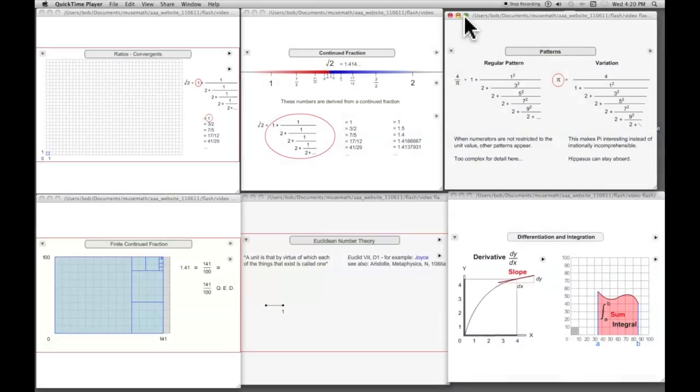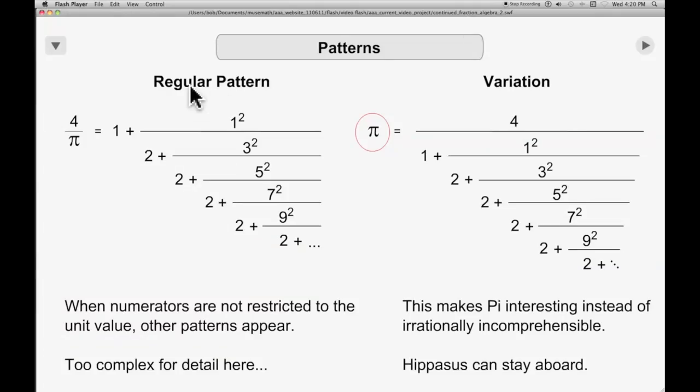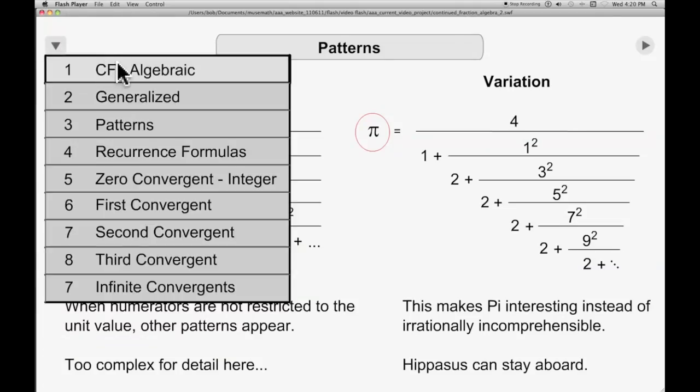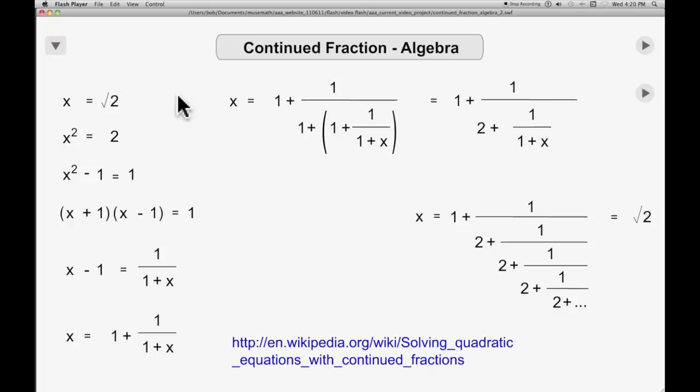You can also show something of the algebraic solution on the continued fraction. For the square root of 2, you would just square both sides from x equals the square root of 2 to x squared equals 2.